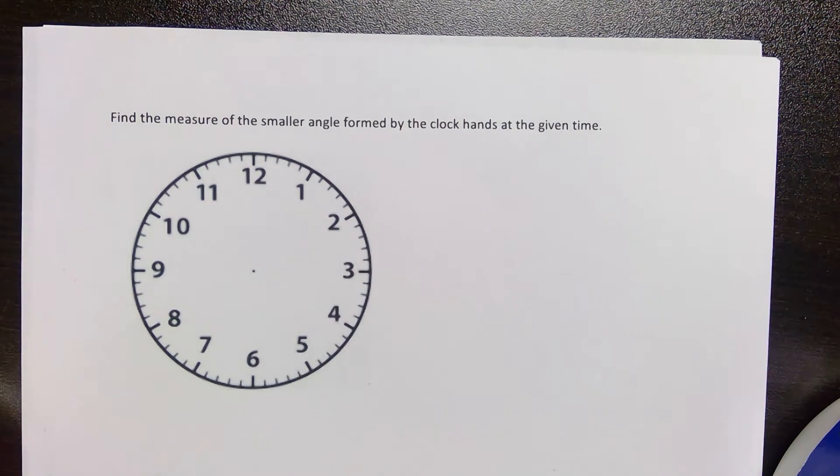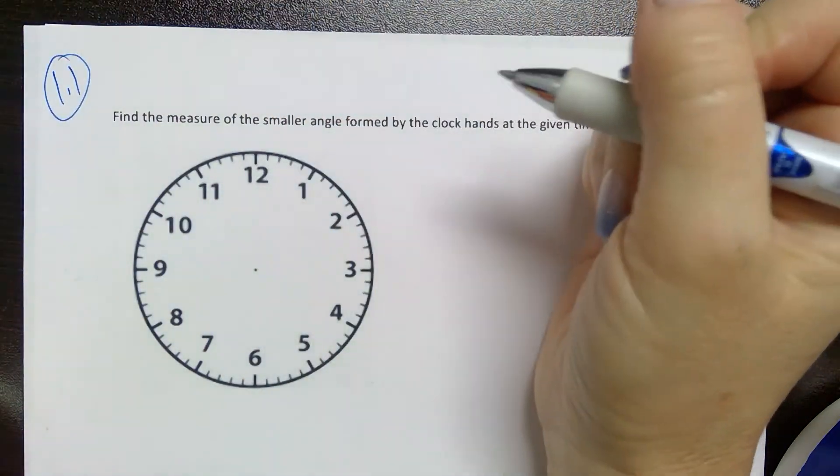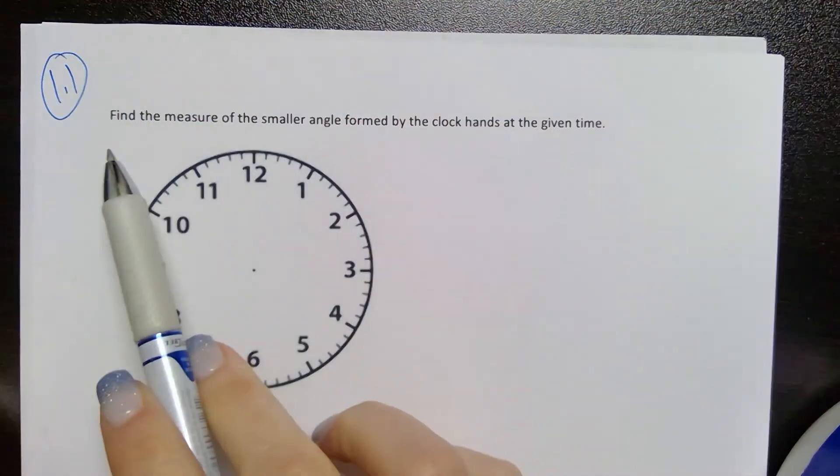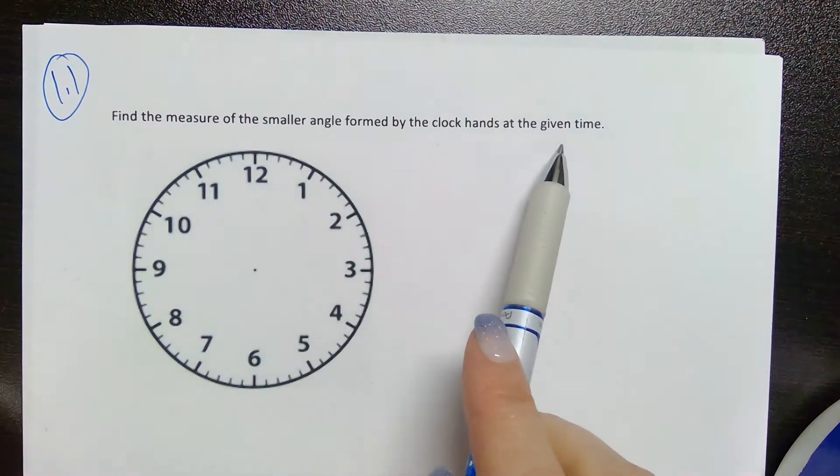Alright guys, one of the questions in homework section 1-1 is a clock math problem. It asks you to find the measure of the smaller angle formed by the clock hands at the given time.